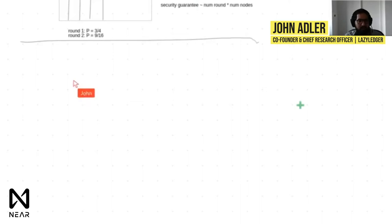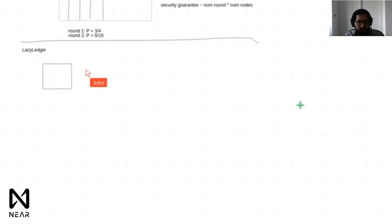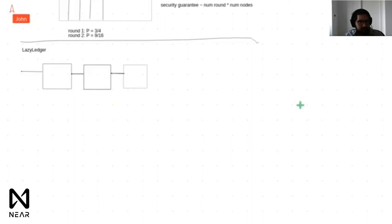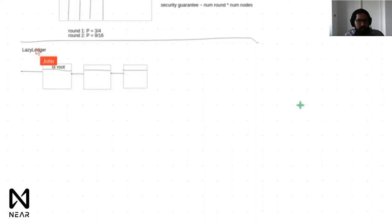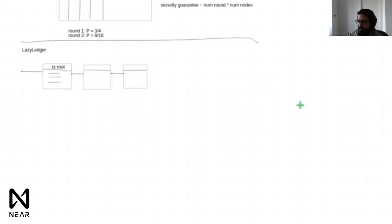So now we go on to the main topic of today's conversation: lazy data. Let's draw our blockchain again. Here's our blockchain — it's really nice that they have built-in arrows. We have our block headers, and each block header will have a transaction root in it, which commits to all the transactions. Now we note something interesting.